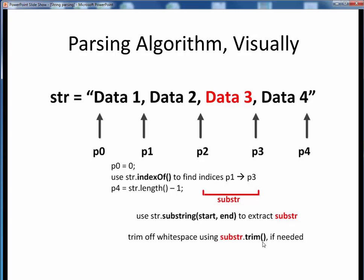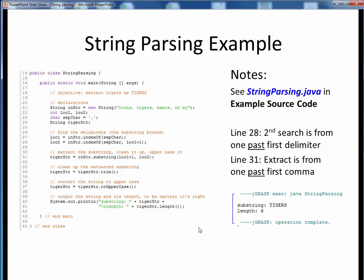Let's next go over a code example of performing these steps. Here's a short code example demonstrating all the steps we've just gone over. I'll defer the details to the short code walkthrough video for StringParsing.java, which is shown here. Open up this file in JGrasp so you can follow along. You'll find this example in the usual place on Canvas.